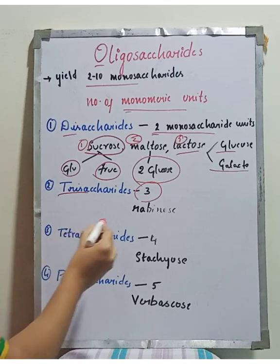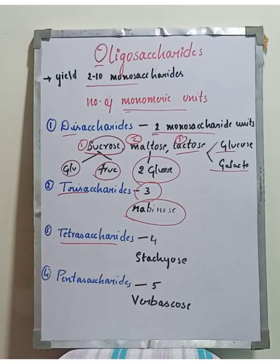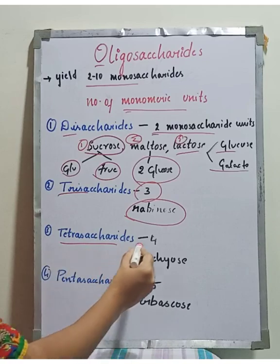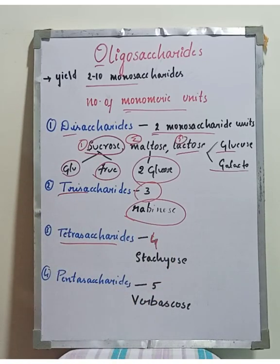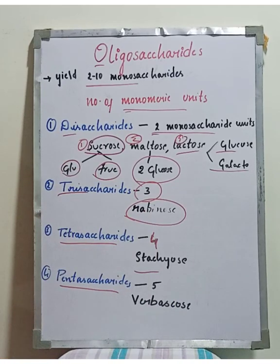Further oligosaccharide types include trisaccharides, which yield 3 monosaccharides on hydrolysis, and tetrasaccharides, which yield 4 monosaccharide units. An example of a tetrasaccharide is stachyose. Pentasaccharides yield 5 monomeric units.